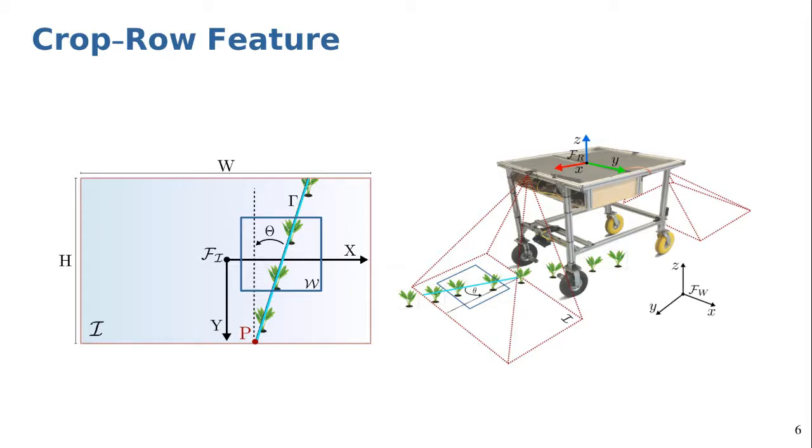We then estimate the path curve along which robots should navigate by computing the line that best fits all center points using a robust least square fitting method.